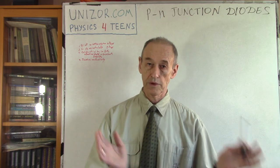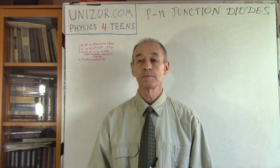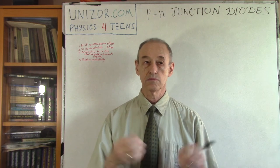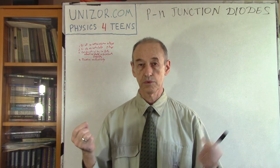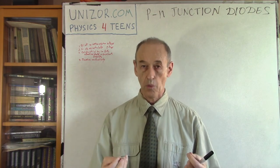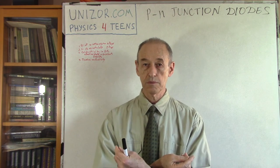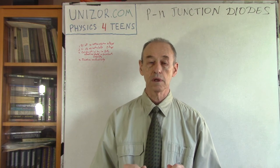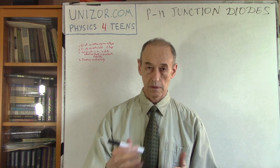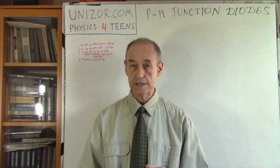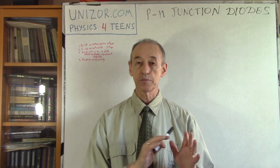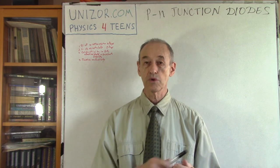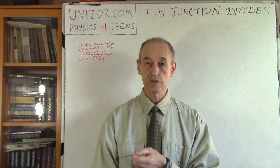Diodes, as we know from previous lectures, are electronic devices which allow current to go only in one direction. A diode has two ends, and if you put electricity plus and minus in one way the current will go through. If you change the polarity, the current will not go through.